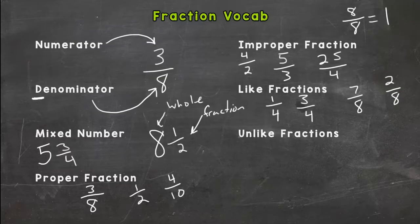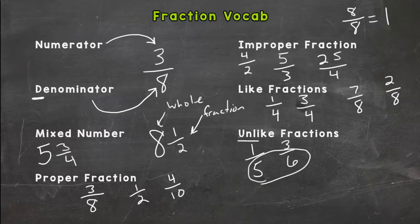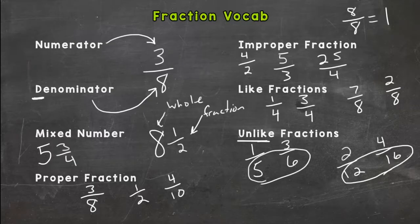Unlike fractions means the denominators are different. So one-fifth and three-sixths, denominators different, so they are unlike. Two-twelfths and four-sixteenths, denominators are different, so unlike. These two come into play when we get into adding and subtracting fractions.